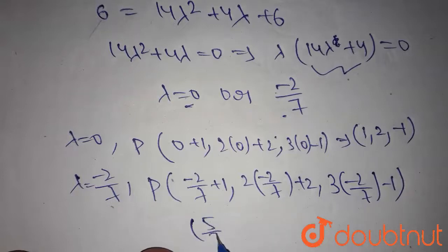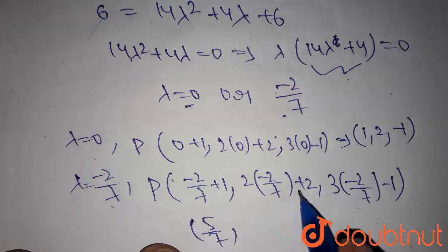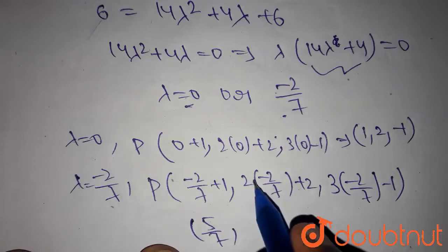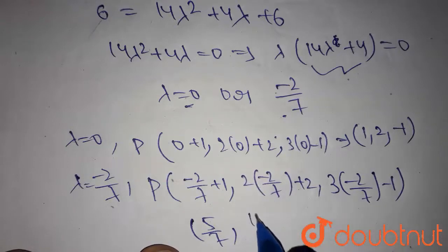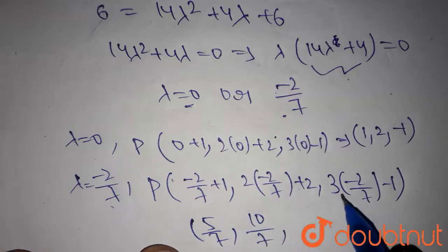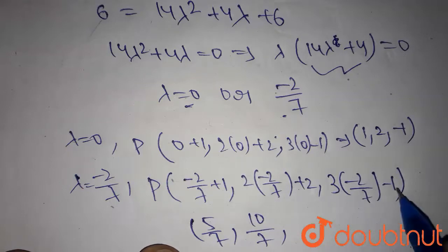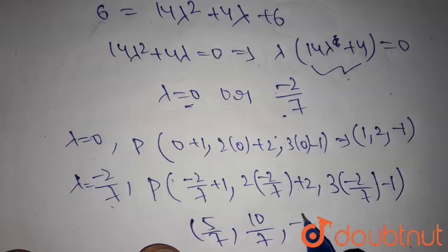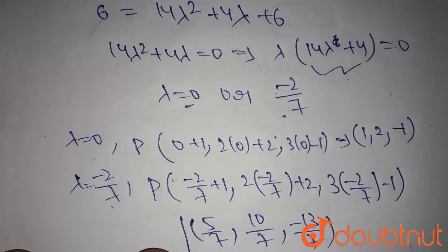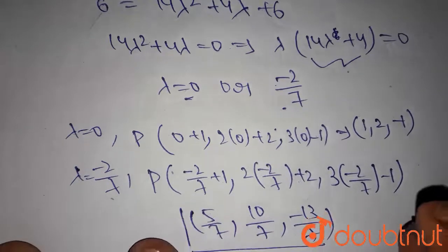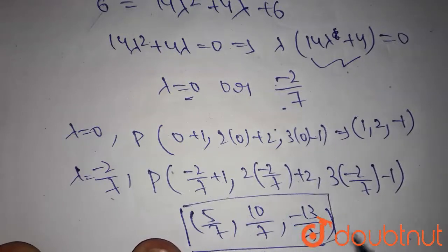Similarly here, 14 minus 4 is 10 by 7 comma, minus 7 minus 6 is minus 13 by 7. These are the two points which are at a distance of root 6 units from the given line.